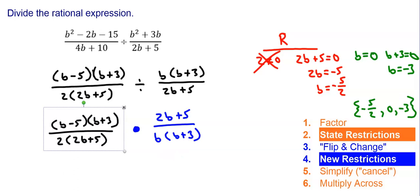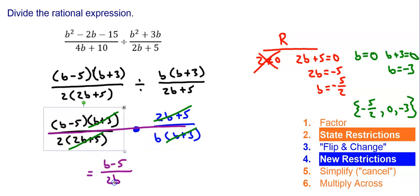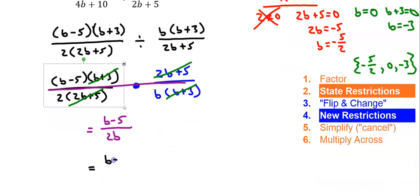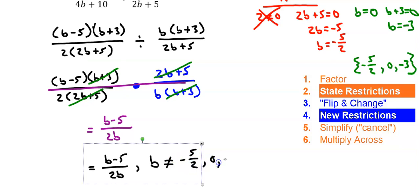I can multiply across and simplify — combining into one big numerator and denominator. I have b plus 3 in top and bottom, so that's one. I have 2b plus 5 in top and bottom, so that's one. I'm left with b minus 5 in the numerator and 2 times b in the denominator. So I write this as b minus 5 over 2b, where b cannot equal negative five-halves, 0, or negative 3.